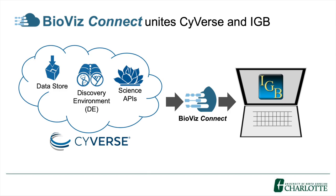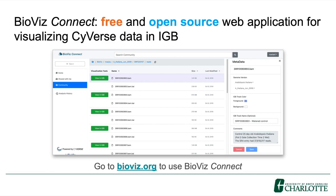Thankfully, CyVerse has created an incredibly powerful way to connect with its resources through their science APIs, specifically the Terrain API. Therefore, we created BioViz Connect, a web application that utilizes the Terrain API to unite the data storage and analysis of the CyVerse discovery environment with the genomic visualization of the Integrated Genome Browser. BioViz Connect is a web application that you run in your web browser from BioViz.org. It is free to use and completely open source, just like IGB. The focus of BioViz Connect is making it as easy as possible to view your CyVerse data in IGB.